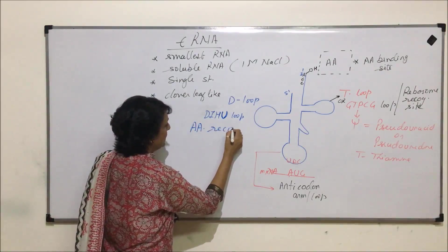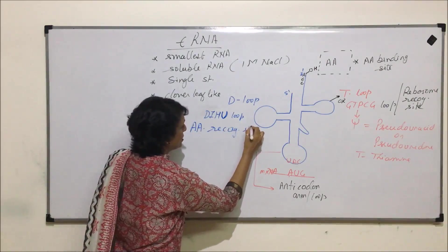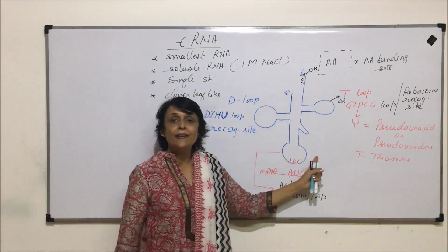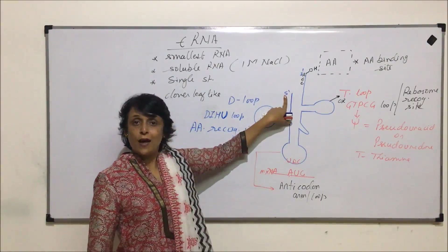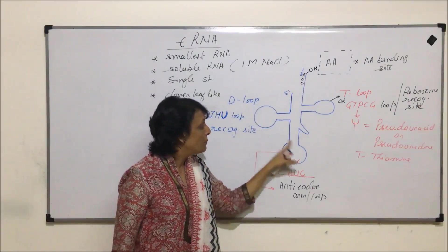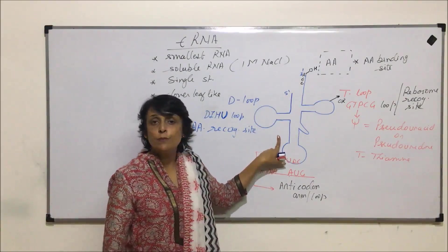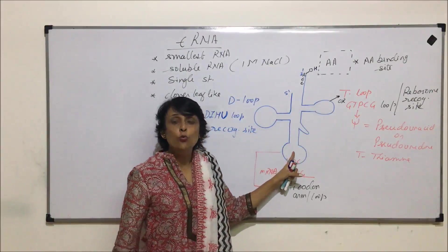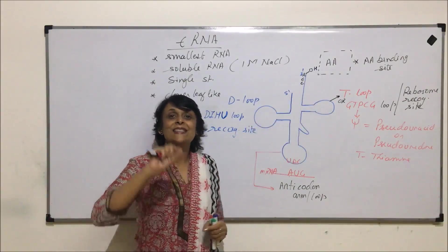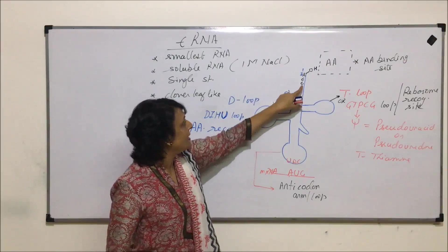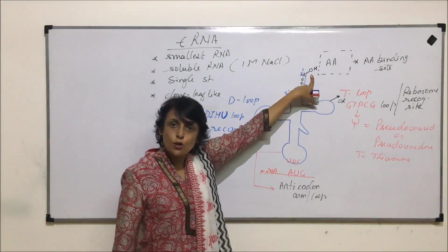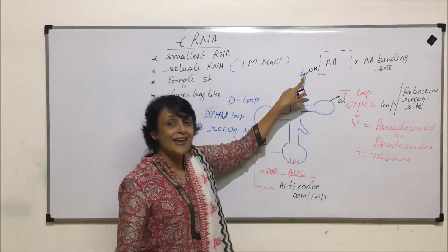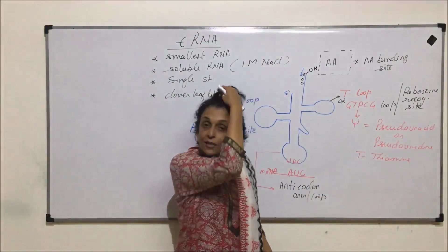The function of the D-loop is amino acid recognition — it is the amino acid recognition site. To summarize: tRNA is a single-stranded structure. One end is the 5' end and the other has the 3' end free. Because of bonding between nitrogen bases of the same strand, it gets a clover leaf shape. The 3' end always has the CCA sequence, and the OH functional group is free there, making it the amino acid binding site.